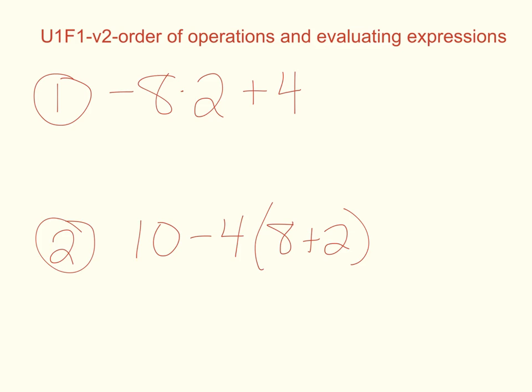Our first numerical expression is -8 times 2 plus 4. If we're thinking of PEMDAS, let me just jot that down here. We're looking at multiplication being first. So, -8 times 2 is -16. Then we're going to add 4 to it. -16 plus 4 equals -12. And there's our first answer.